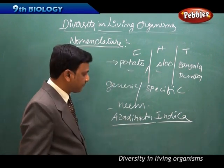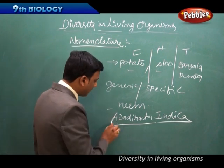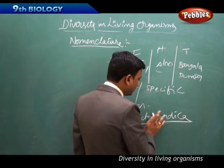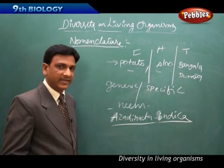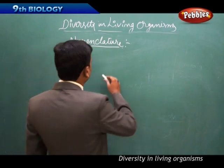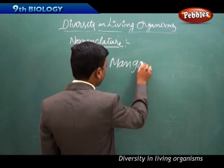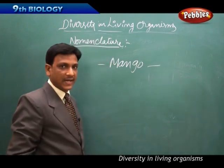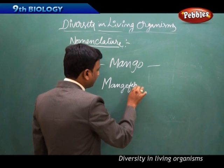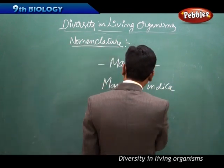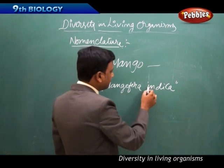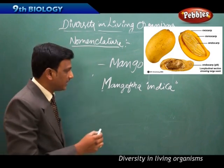There are rules for writing scientific names. The first letter of the generic name is capitalized, but the species name is written entirely in small letters. For example, the mango tree's scientific name is Mangifera indica — 'Mangifera' starts with a capital letter, 'indica' is in small letters. When printed, scientific names should be in italics.